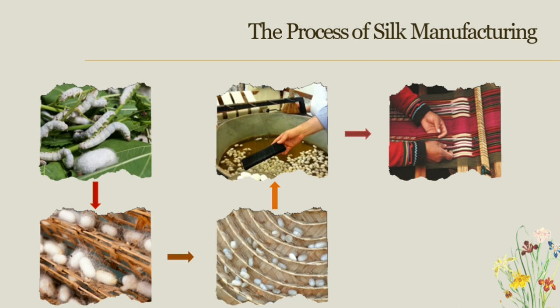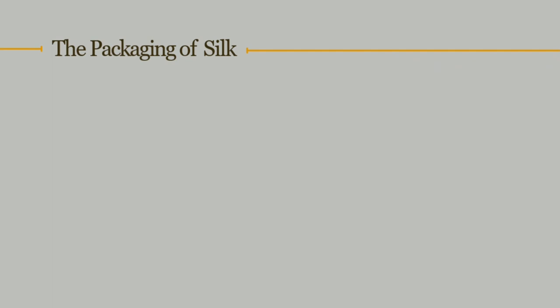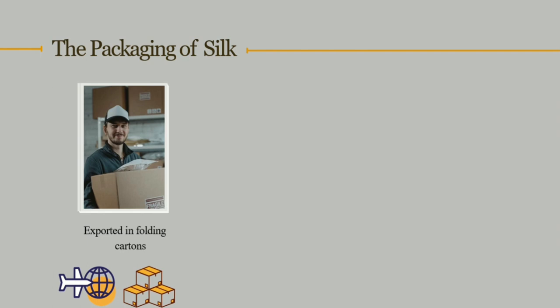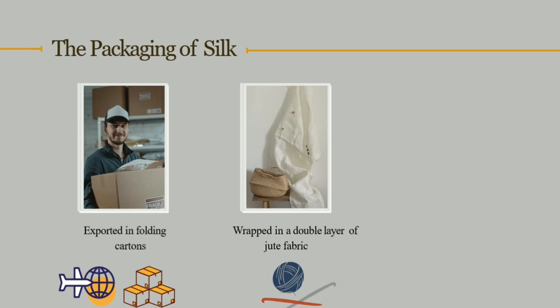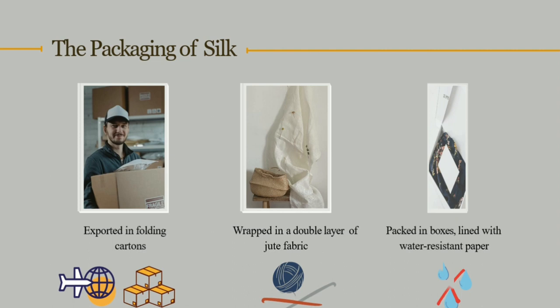For the packaging of silk, raw silk is exported in folding cartons or reels, such as silk filaments wound in skeins. The silk skeins are packed in bale bales and wrapped in a double layer of jute fabric and plastic film. Silk products are also packed in boxes lined with water-resistant paper.